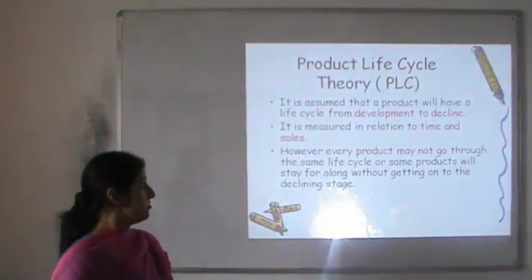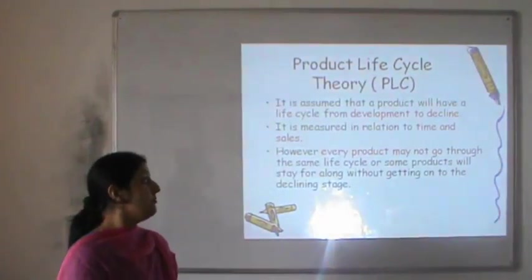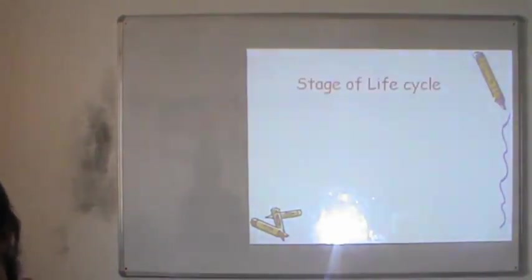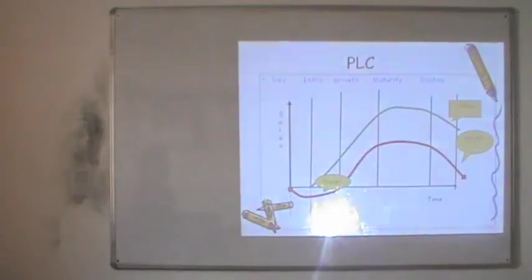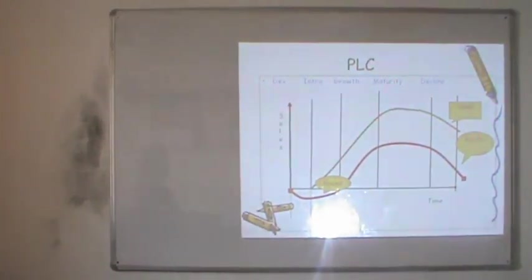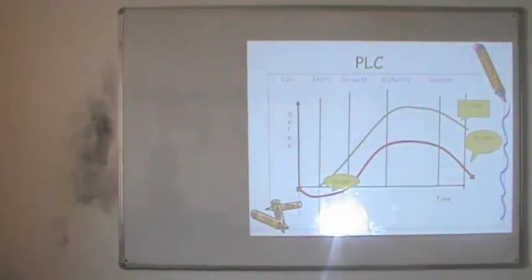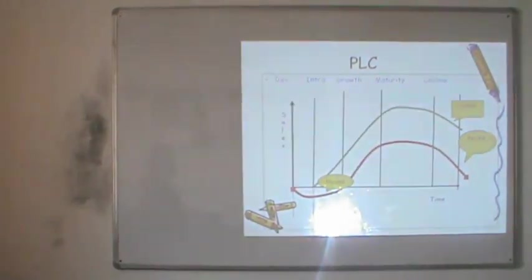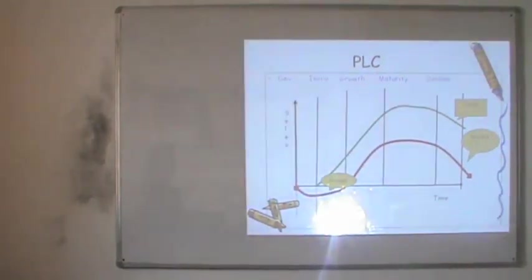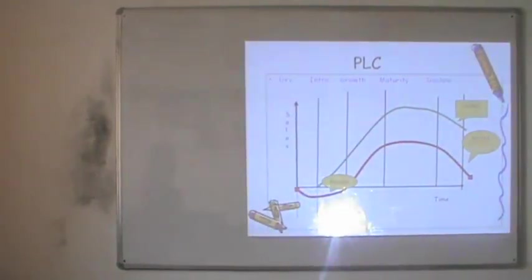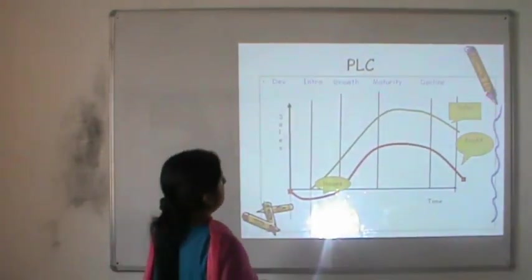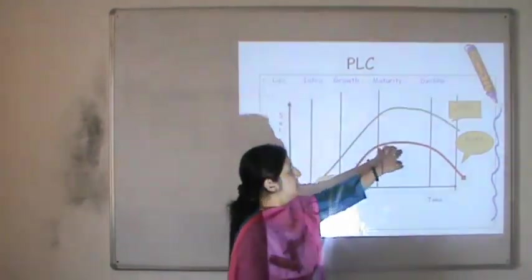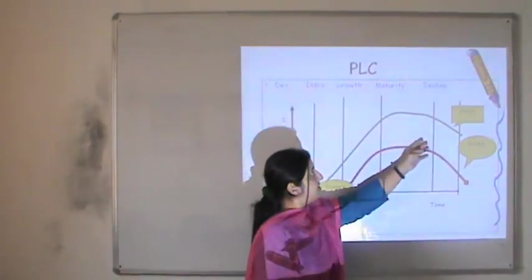Every product may not go through the same life cycle; some products stay for a long time without reaching the decline stage. There are five stages in the product life cycle: development, introduction, growth, maturity, and decline. The green curve in the chart shows the sales curve over time, while the red curve shows the profit curve — in the initial period the company makes losses, and as sales pick up, the profit curve also rises.